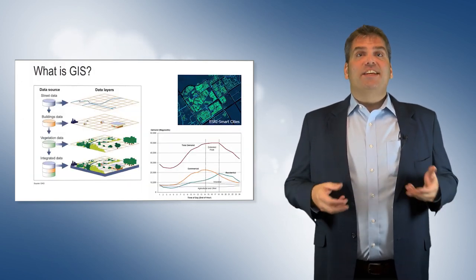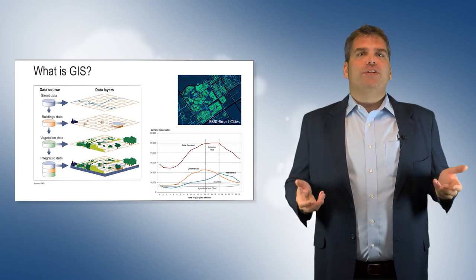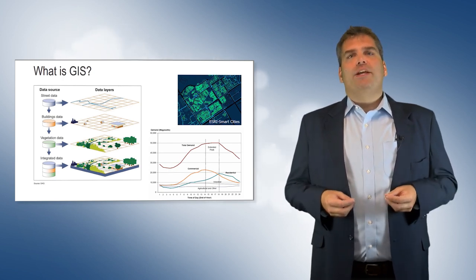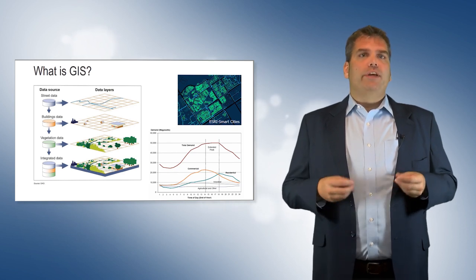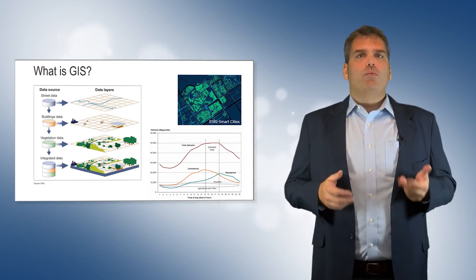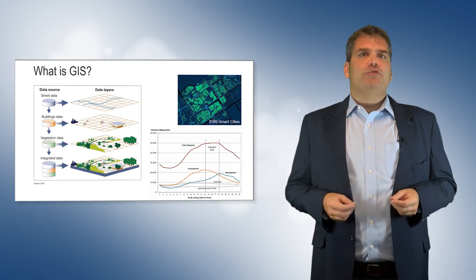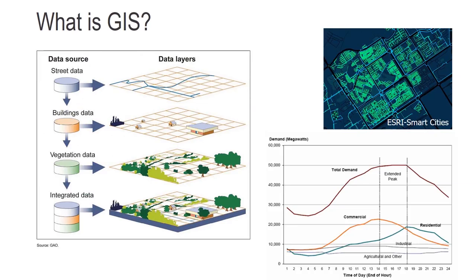GIS can stand for Geographic Information Science or Geographic Information System. GI Science raises questions concerning the acquisition, processing, representation, and analysis of geospatial data. Geographic Information Systems are tools that allow GI scientists to manipulate geospatial data.